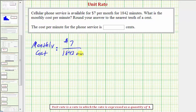And therefore, to find our unit rate, we'll divide the numerator and denominator by 1,842.